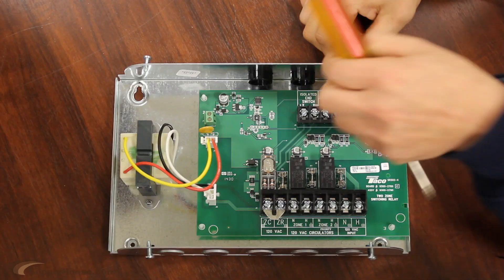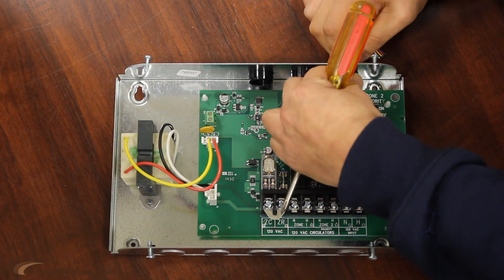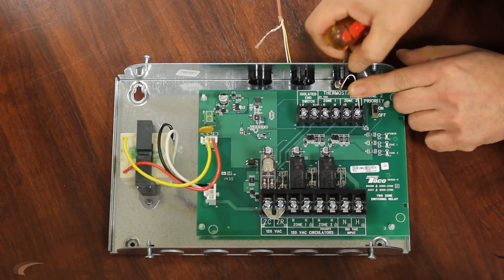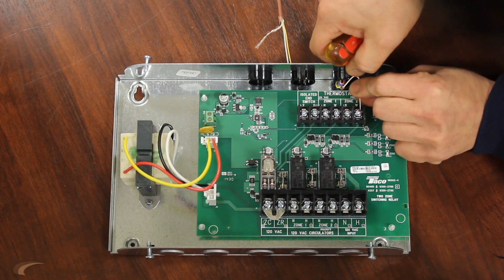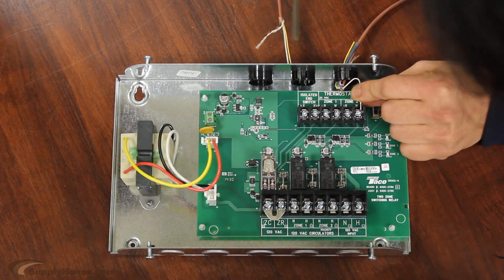The first thermostat, let's say from the second floor, will come into the relay and connect to zone 2. We will only use the W wire for this thermostat since it will be stealing power from the furnace or boiler.